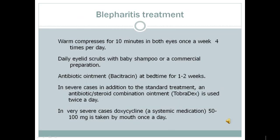Ocular hygiene is the mainstay of blepharitis treatment. Warm compresses for 10 minutes on both eyes, once a week up to four times per day. Daily eyelid scrubs with baby shampoo or a commercial preparation. Antibiotic ointment, bacitracin, at bedtime for one to two weeks. In severe cases, an antibiotic-steroid combination ointment, TobraDex, is used twice a day. In very severe cases, a systemic medication, doxycycline, 50 to 100 milligrams, is taken by mouth once a day.